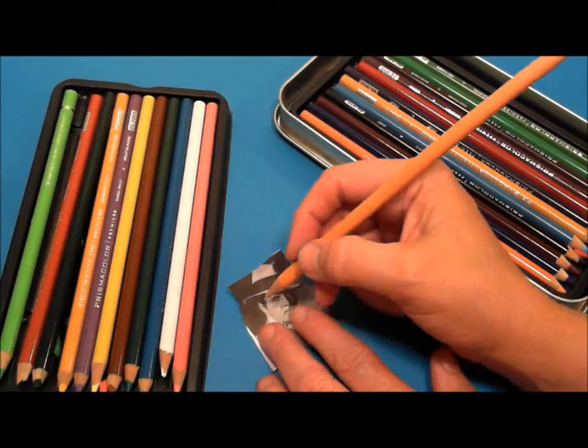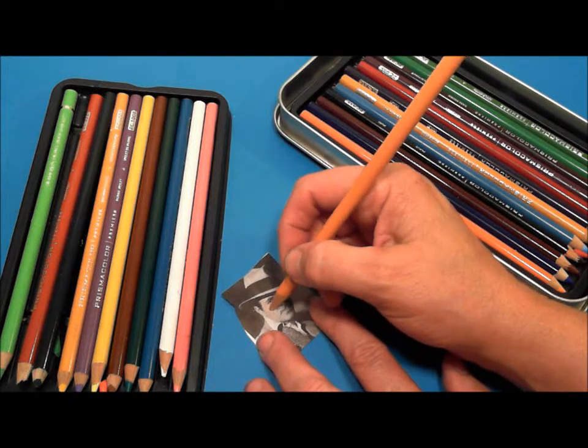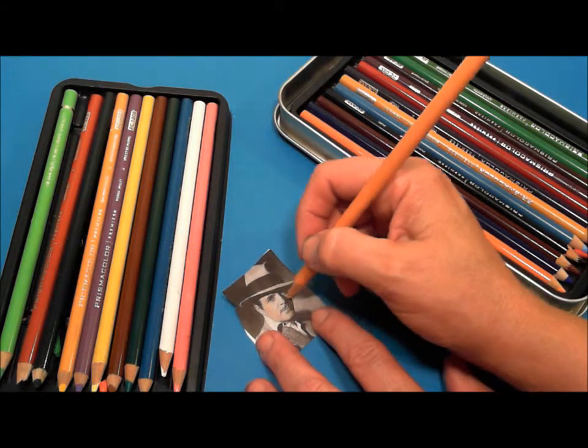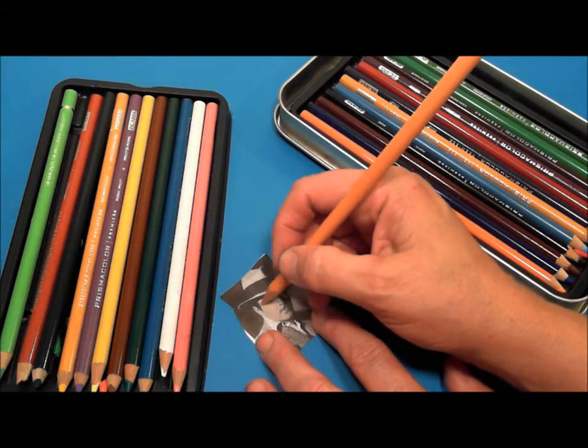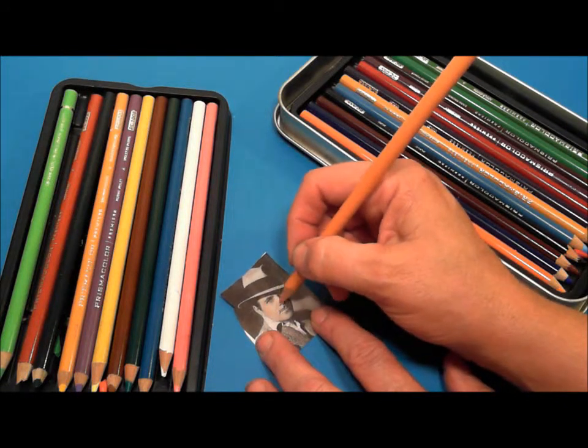Using my Prismacolor pencils I now colorize my photograph. And I really love this technique - having the grayscale image behind gives you a sense of values so it's very nice and I like to really do it smooth so I don't see pencil strokes.